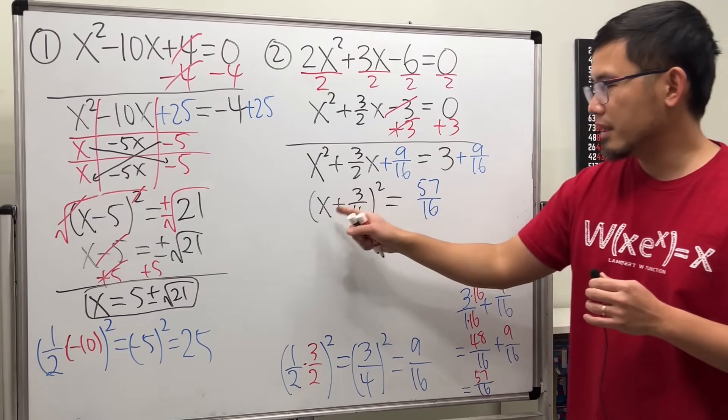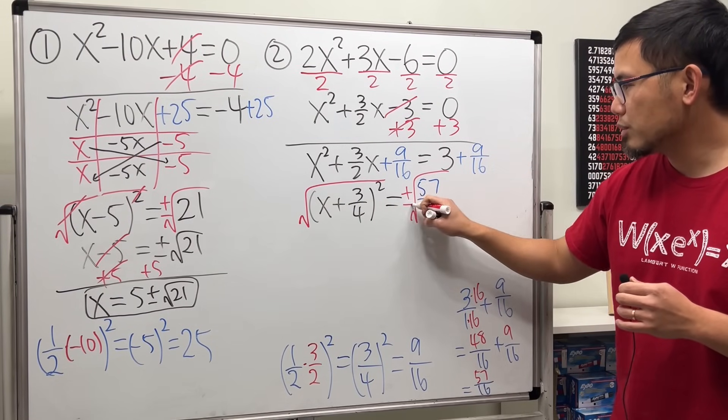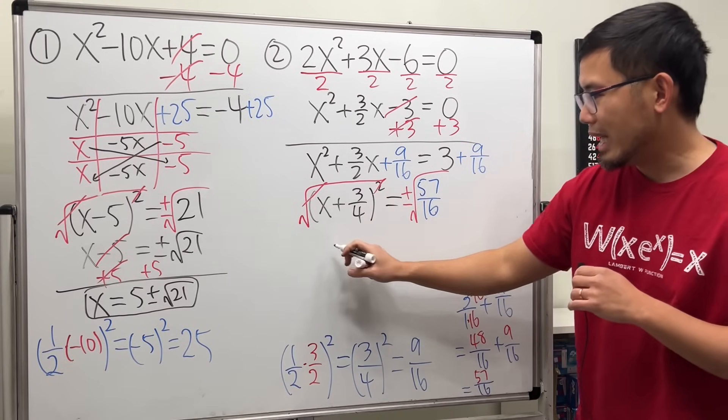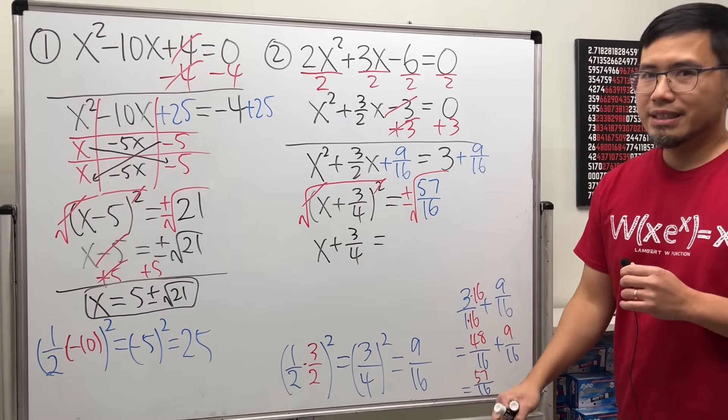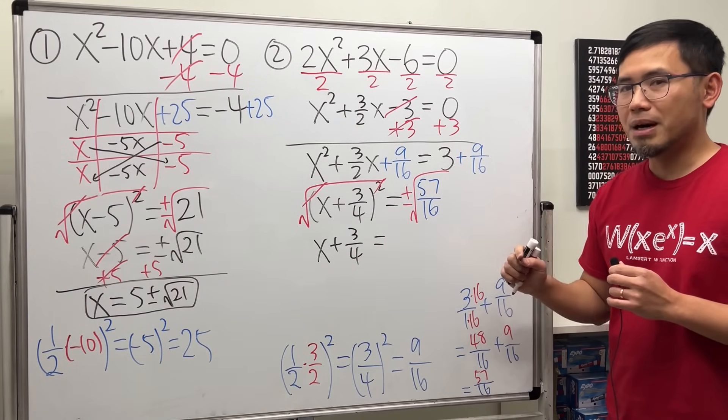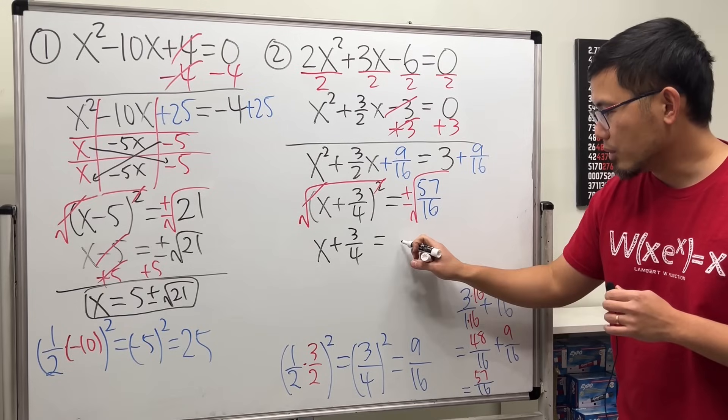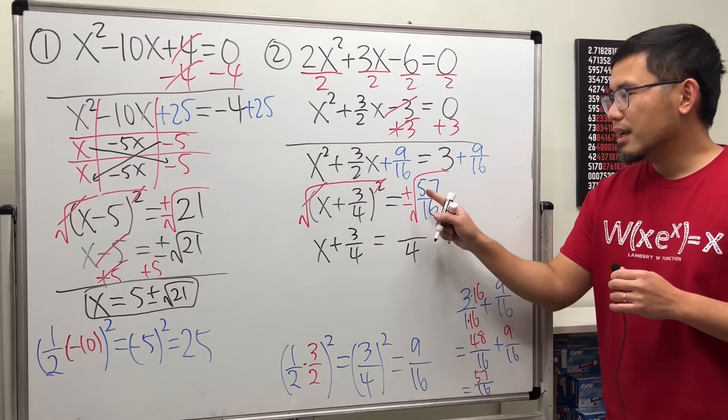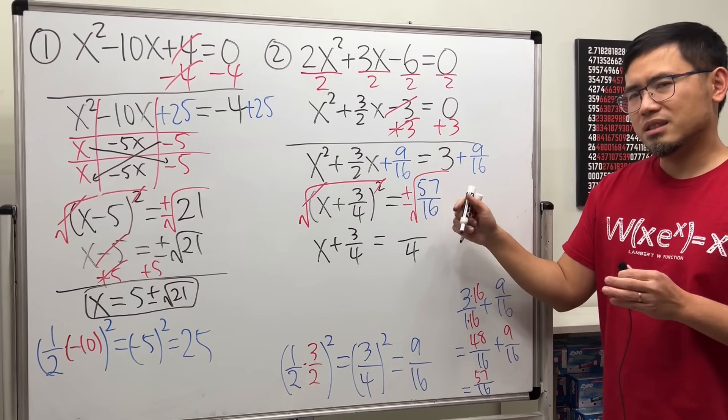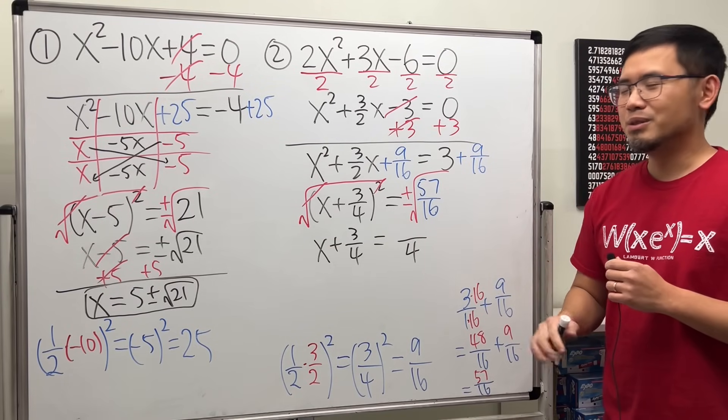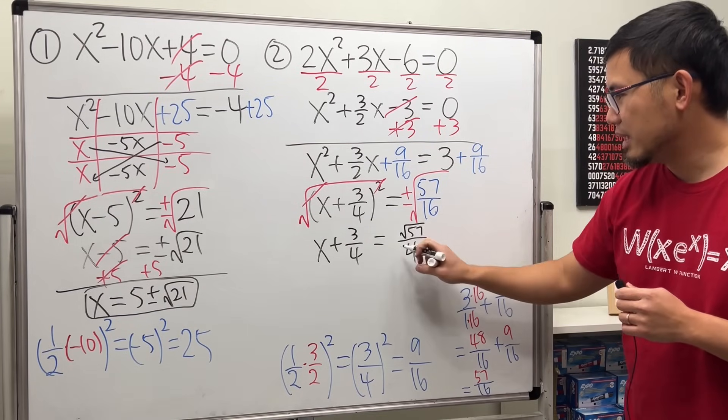And then to continue, get the x by itself, we just take the square root here, and the square root here, plus or minus, cancel this and that, and we will have the x plus 3 over 4 equals, square root of the top, square root of the bottom. Square root of 16 is 4, so the bottom, no more square root. Square root of 57. If you break down 57, it's 3 times 19, that's the most we can do. Just leave it. So we have square root of 57, and then we have that plus or minus.